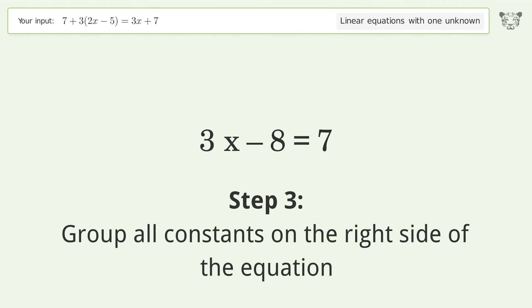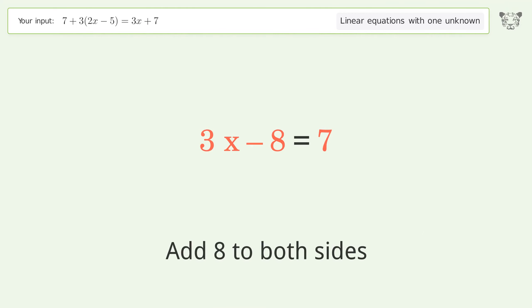Group all constants on the right side of the equation. Add 8 to both sides and simplify the arithmetic.